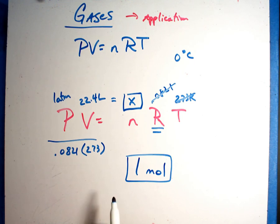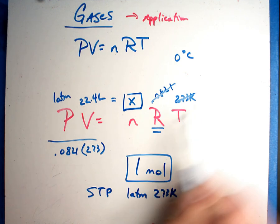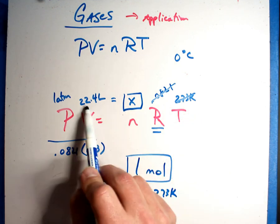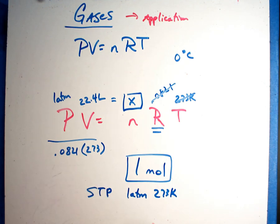For any gas at STP, STP was 1 atmosphere and 273 Kelvin. All I'm doing is plugging those numbers into the formula. There's my 1 atmosphere. There's 273 Kelvin. Okay? 1 mole, which is what the answer came out to, was equal to 22.4 liters.